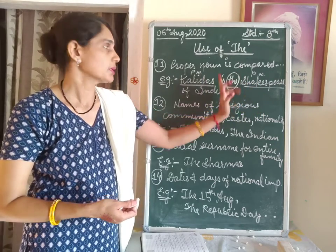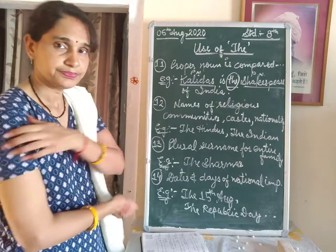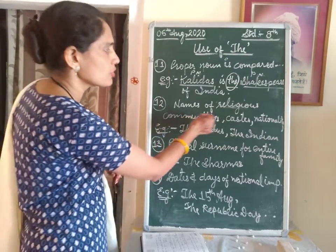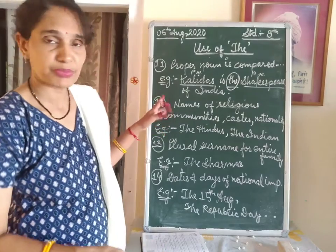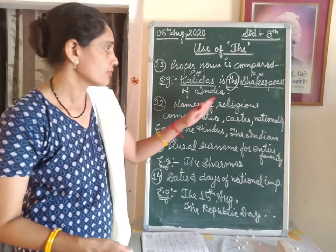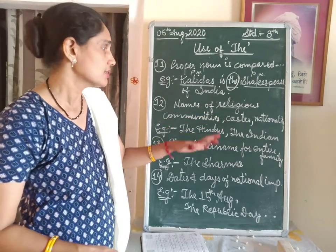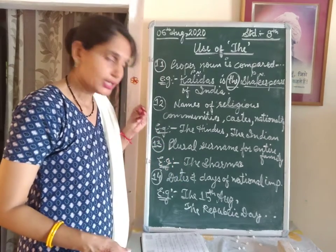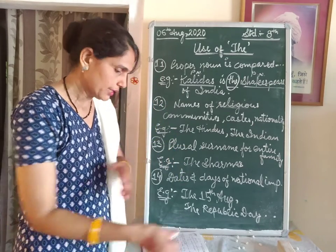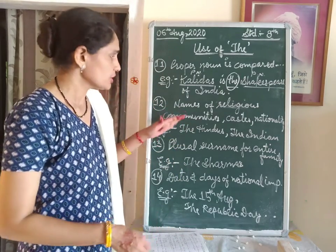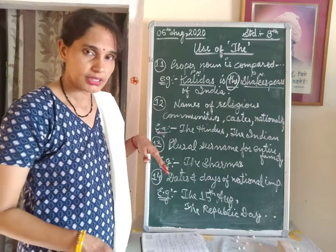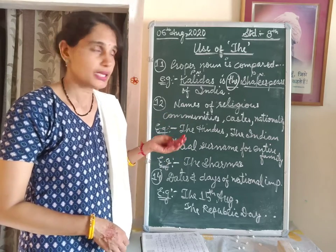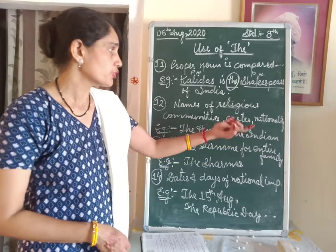Other categories of proper nouns include: caste, nationality, names of ships, aeroplanes, trains, and religious community names.